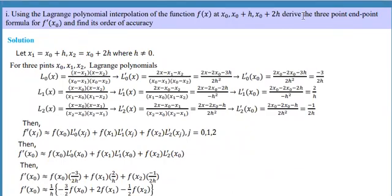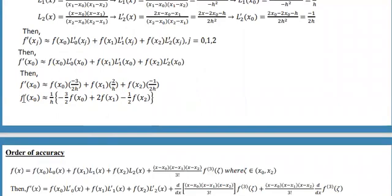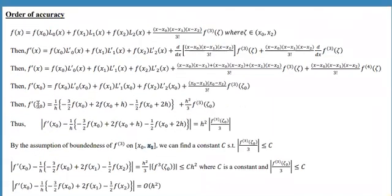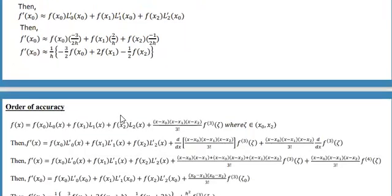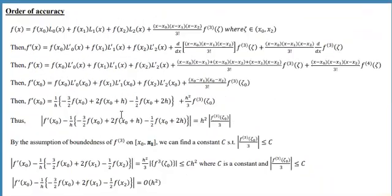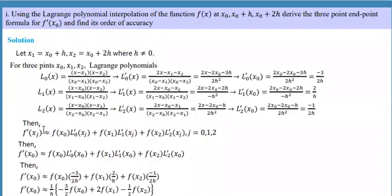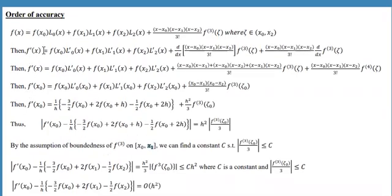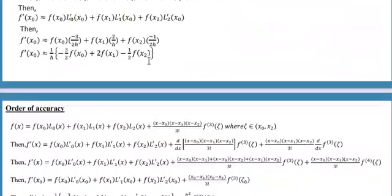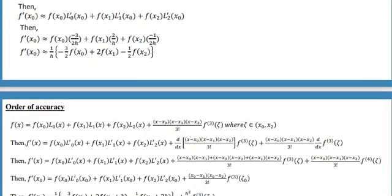So we have derived an approximation to f prime at x₀ and proved its order of accuracy. I remind you to put the approximation mark when finding an approximation, and use the equal sign for the error analysis. This is the complete analysis, and I hope you understood this.